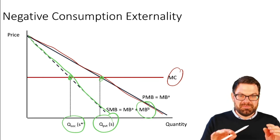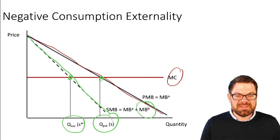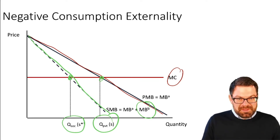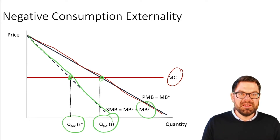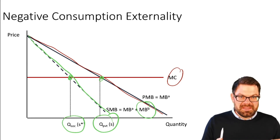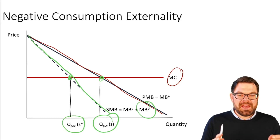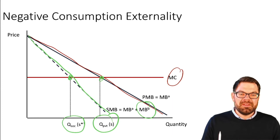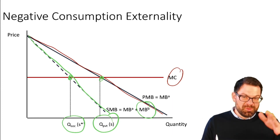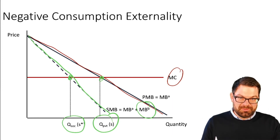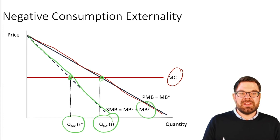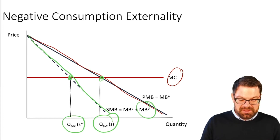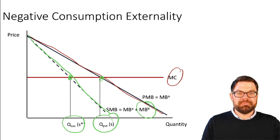The bottom line is: with an externality, that is a market failure. We typically have overproduction or overconsumption if it's a negative externality. If it's a positive externality, we will see the opposite.